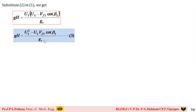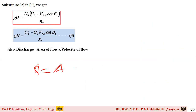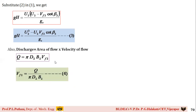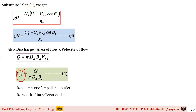Expressing in terms of discharge Q: the discharge is Q = area of flow × flow velocity. At the outlet, the area of flow is π·D2·B2, so Q = π·D2·B2·VF2. Therefore VF2 = Q / (π·D2·B2), where D2 is the diameter of the impeller outlet and B2 is the width of the impeller outlet. Substituting VF2 into the equation, the head equation is remodified.